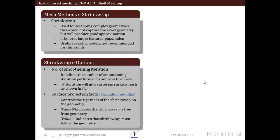Now let us discuss the next method, which is called shrink wrap. As the name suggests, this method uses a wrapping technique, which means it will not capture the exact geometry features. It could approximate an overlapping mesh, which is called a shrink wrap. It ignores detailed features like gaps and holes. It is used mostly for solid modeling, that is when we have to consider conduction or heat transfer between solids. It is not recommended for thin solids or for detailed modeling of fluids. A number of different options are available to control the mesh.